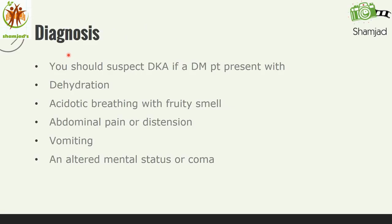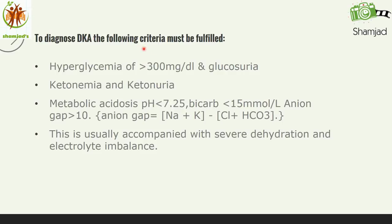Next we will see diagnosis. You should suspect DKA if a diabetic patient presents with dehydration, acidotic breathing with a fruity smell, abdominal pain or distension, vomiting, and altered mental status or coma. To diagnose DKA, the following criteria must be fulfilled: hyperglycemia of more than 300 mg per deciliter and glucosuria; ketonemia and ketonuria; metabolic acidosis — pH less than 7.25, bicarbonate less than 15, and anion gap more than 10. Anion gap equals sodium plus potassium minus chloride plus bicarbonate. This is usually accompanied with severe dehydration and electrolyte imbalance.